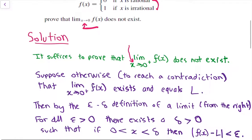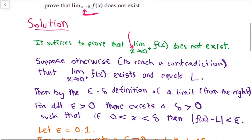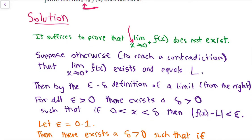So for all epsilon > 0, there exists a delta > 0 such that if x is greater than 0 and less than delta, then the absolute value of f(x) − L is less than epsilon. Note we have x > 0 because we're only considering the limit from the right-hand side. If the limit doesn't exist from the right-hand side, it will not exist from both directions.